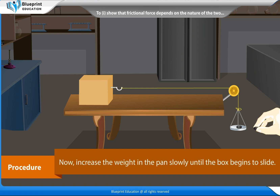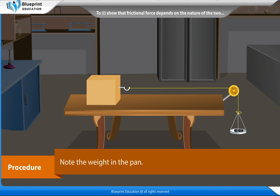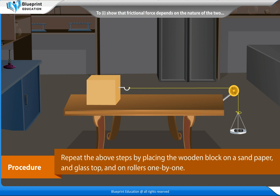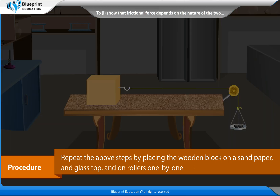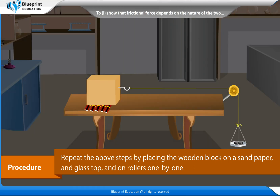Now increase the weight in the pan slowly until the box begins to slide. Note the weight in the pan. Repeat the above steps by placing the wooden block on sandpaper, a glass top, and on rollers one by one.